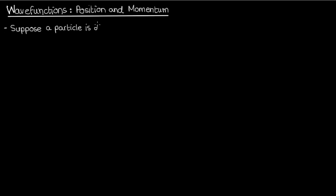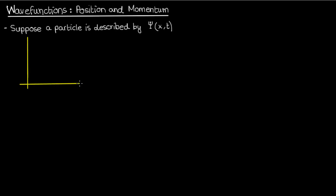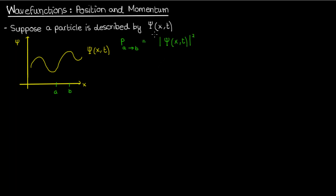Suppose that I have a particle described by its wave function psi, which I'm going to draw right over here. Recall that the wave function is related to the probability distribution of the particle, so if I wanted to calculate the probability that I'll find my particle between two points a and b, I could take the magnitude squared of that wave function and integrate it from a to b.